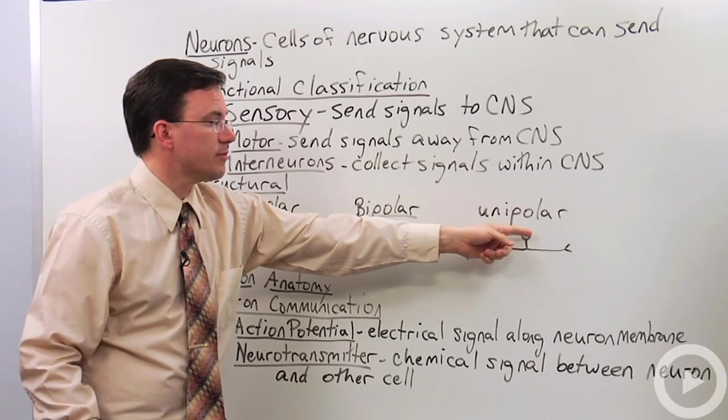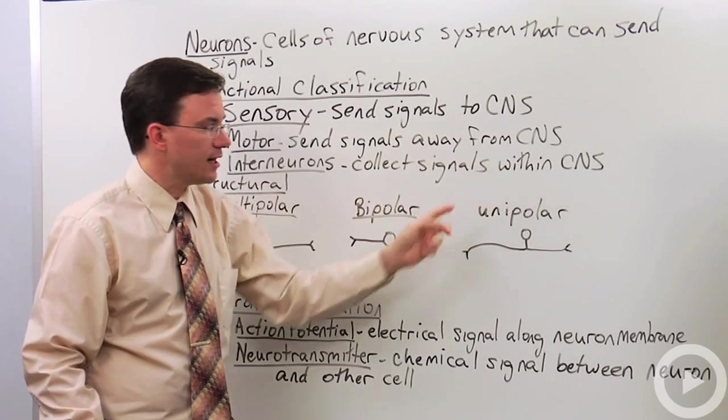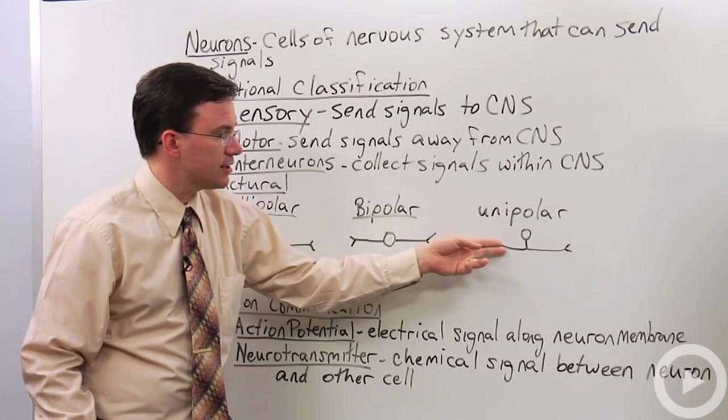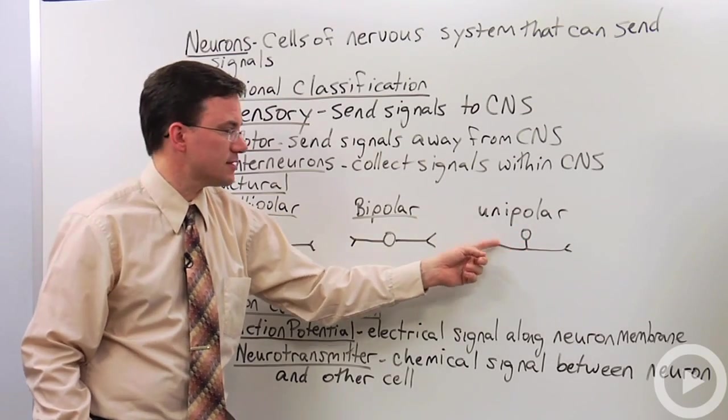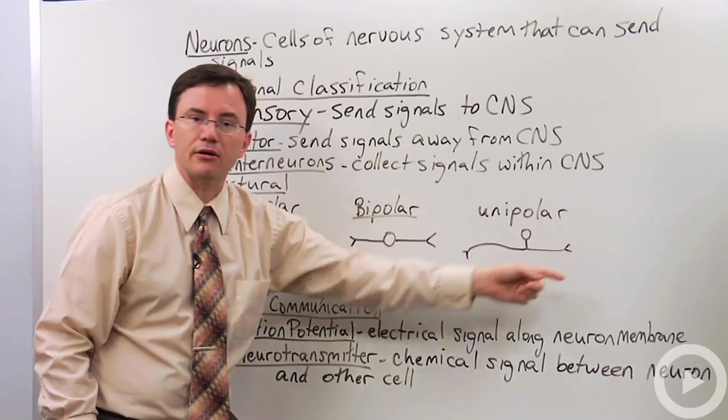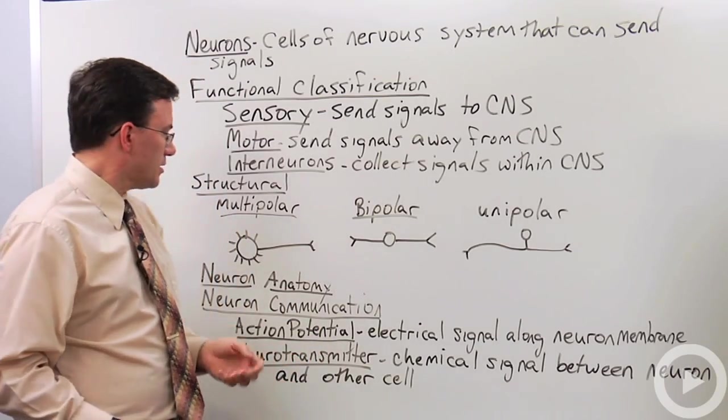Unipolar, you have the main cell body sitting aside as you have the dendrite collecting in information and the cell body doesn't make any decisions about whether or not to send the signal. It just comes in and zips out via the axon.